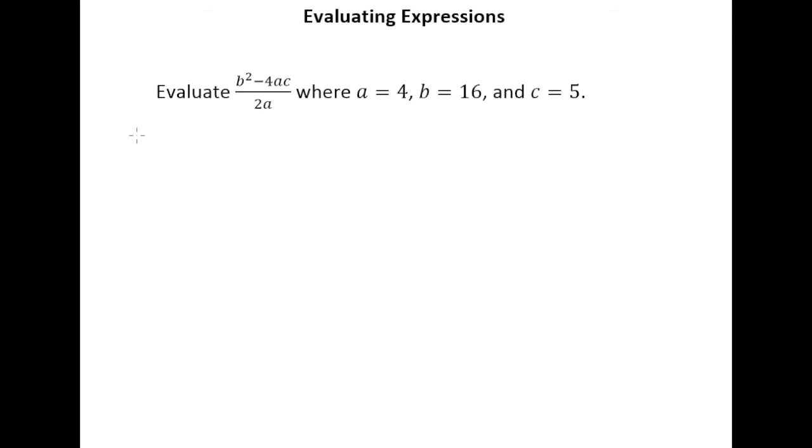I'm going to place 16 in for b. Put a little square there minus 4 times my a which is 4 times my c which is 5, and I'm putting parentheses to indicate that I want to multiply.